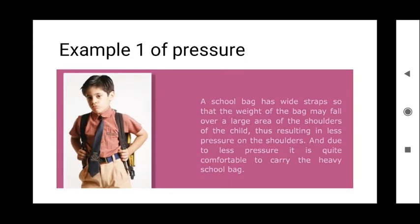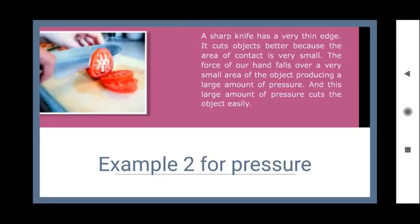Examples of pressure in day-to-day life: A school bag has wide straps so that the weight of the bag falls over a large area of the child's shoulders, resulting in less pressure and making it comfortable to carry. A sharp knife has a thin edge — it cuts objects better because the area of contact is very small. The force of our hand falls over a very small area, producing a large amount of pressure, which cuts the object easily.